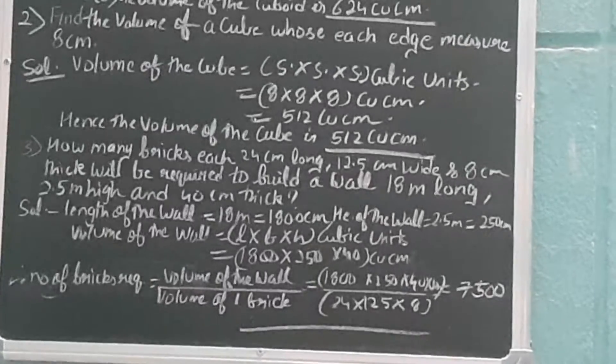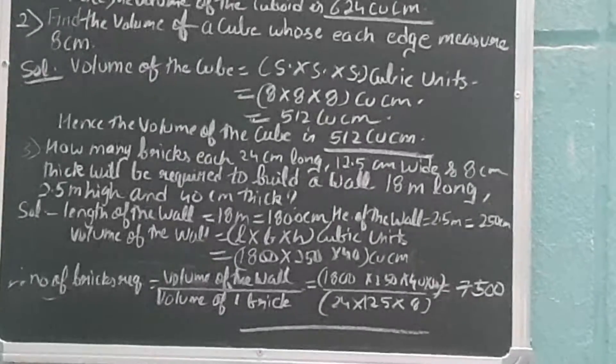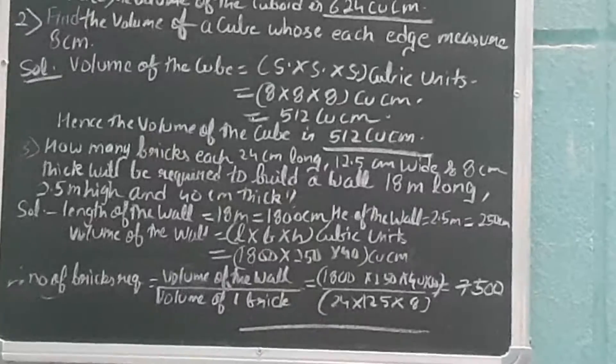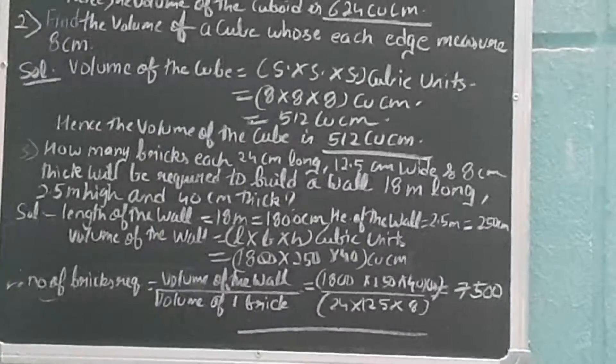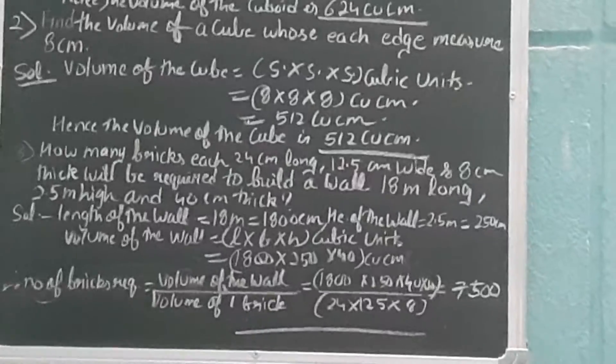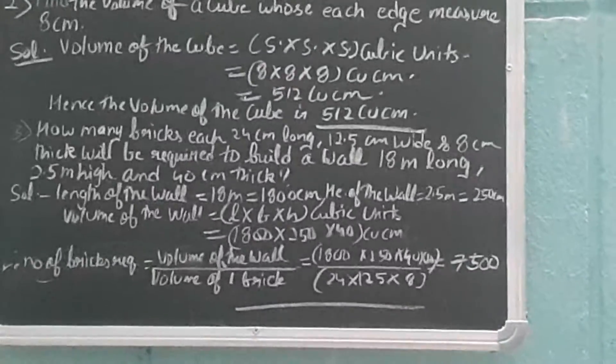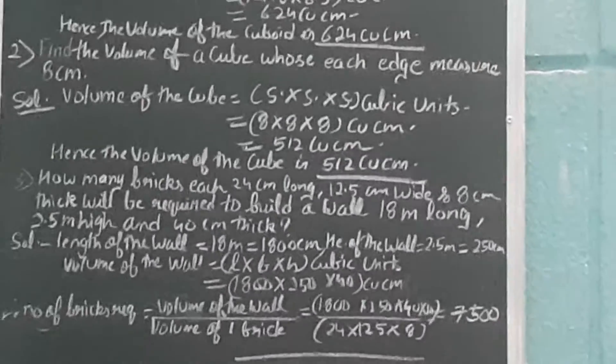And here it is given 12.5, so when we remove this decimal, in place of numerator it will come 1 in place of decimal, and after a decimal one number is given, so we'll add one zero, so it will come 10.